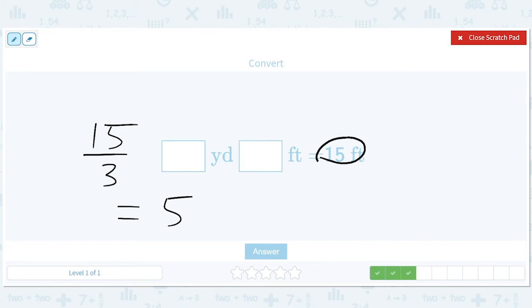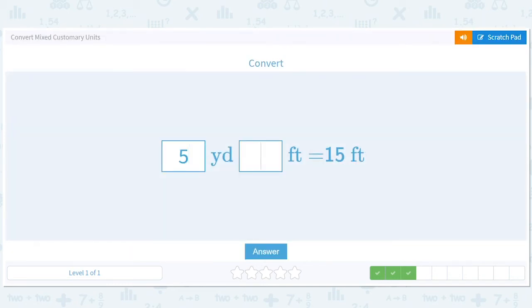So 15 divided by three is five. There's no remainder. So it's just five yards and zero feet.